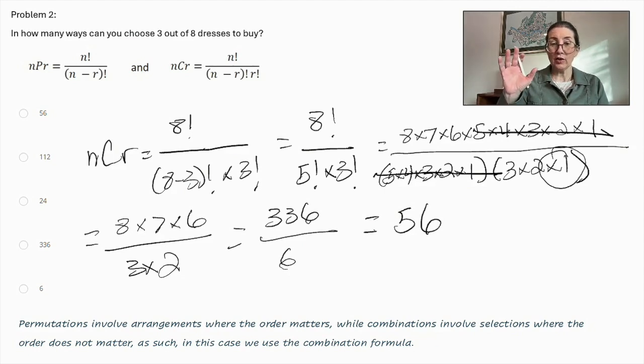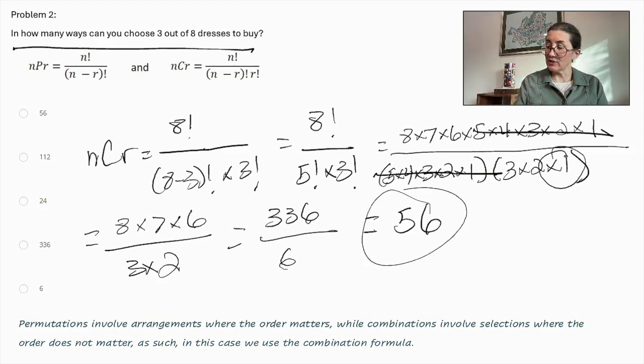Permutations involve arrangements where the order matters, while combinations involve selections where the order does not matter. As such, in this case, with our problem, we use the combination formula, so the answer is 56.